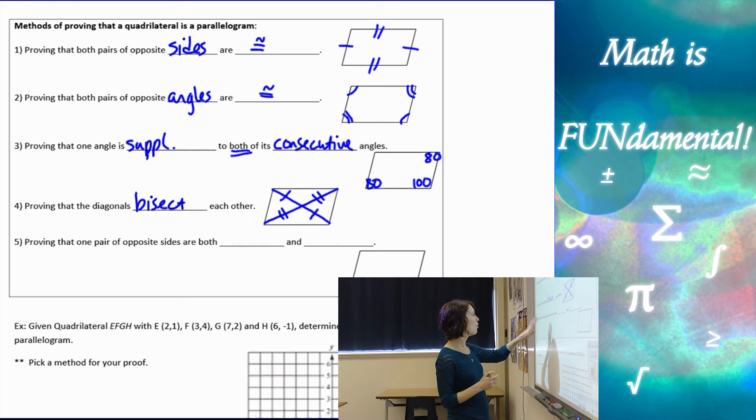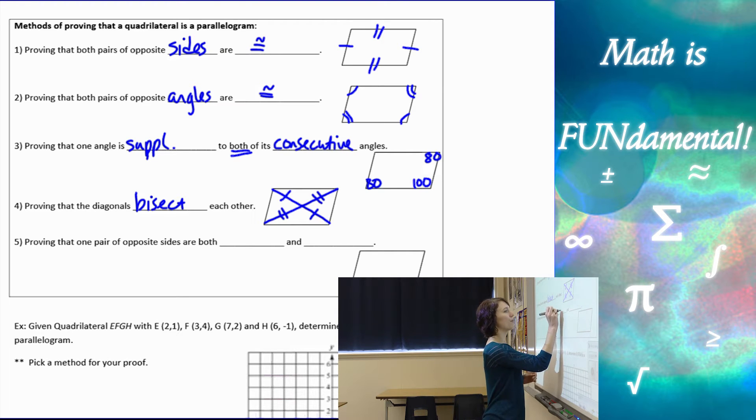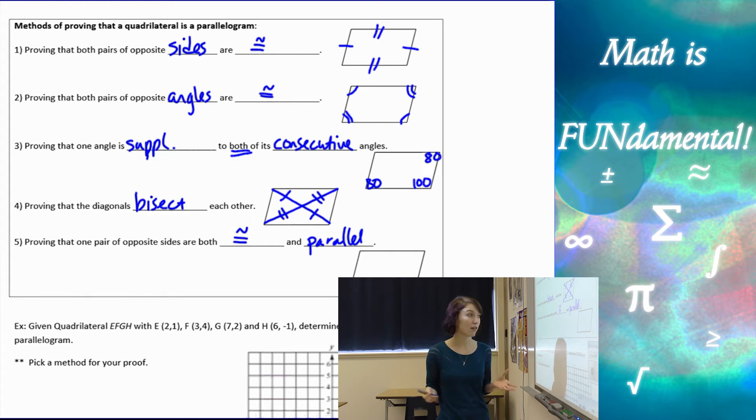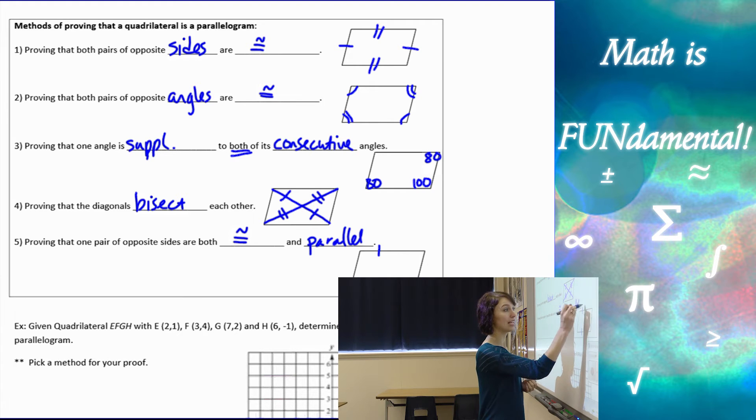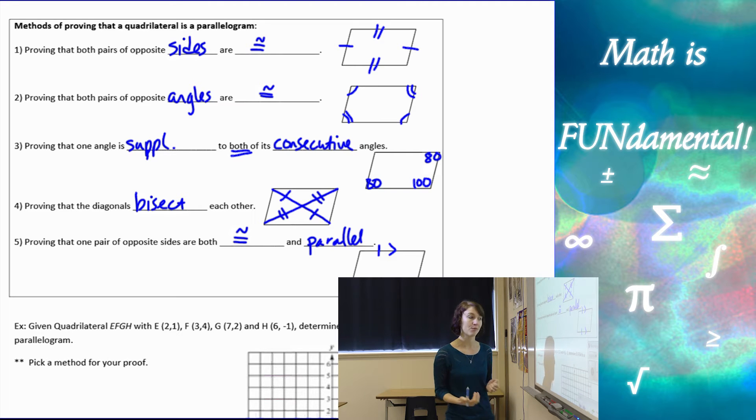The fifth method is proving that one pair of opposite sides are both congruent and parallel. Just choose one pair of sides and prove that they are both congruent and parallel, and that gives you a parallelogram as well.